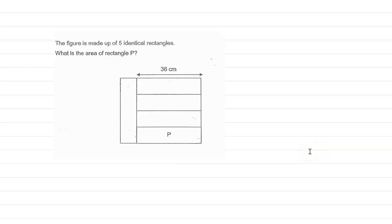Hello everyone, let's solve this area problem. Let's read it out: The figure is made up of five identical rectangles. What is the area of rectangle P? Now, these are the five identical rectangles which have been kept like this.